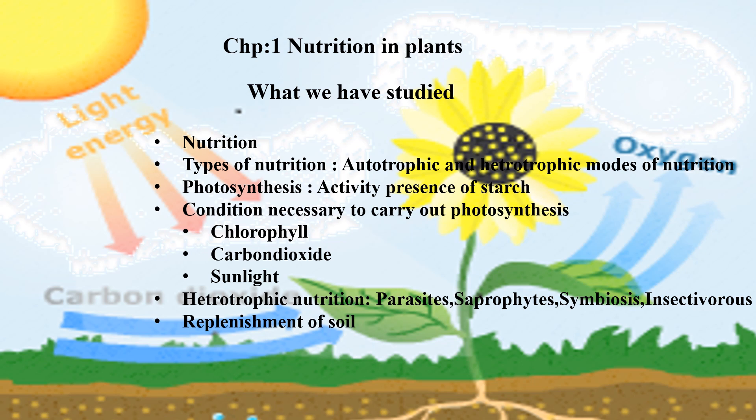What we have studied up till now is what is nutrition. We have seen two different types of nutrition, that is autotrophic and heterotrophic mode of nutrition. We started with the autotrophic mode of nutrition, in which we came across what is photosynthesis, and also we have seen an activity to test the presence of starch, that is the food prepared by the plants.